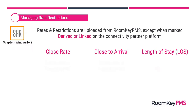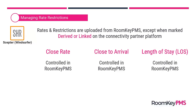For Windsurfer, rates and restrictions applied in Roomkey are uploaded, except if the rate is created as derived or linked on the Windsurfer platform. For all three restriction types — close rate, close to arrival, and length of stay — these can be controlled in Roomkey and uploaded for those non-derived or non-linked rates in Windsurfer.